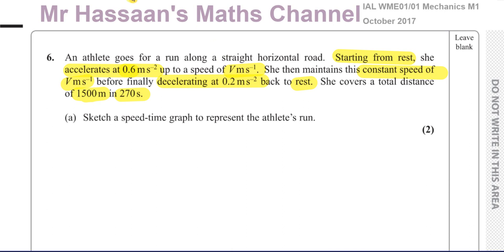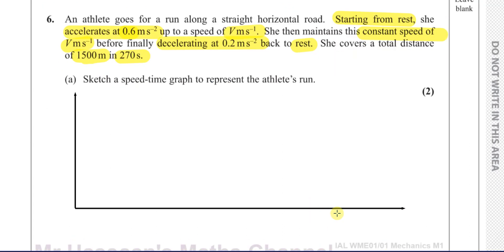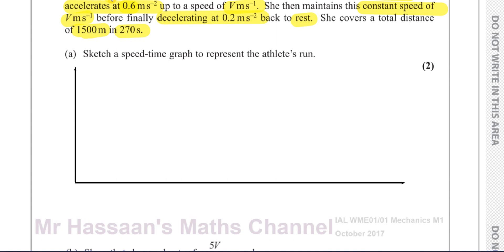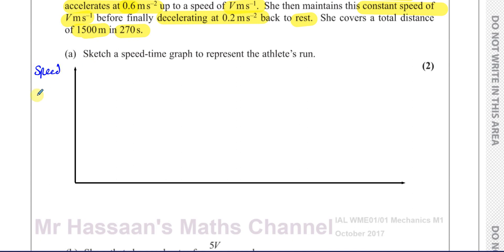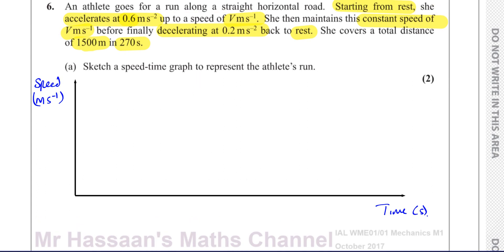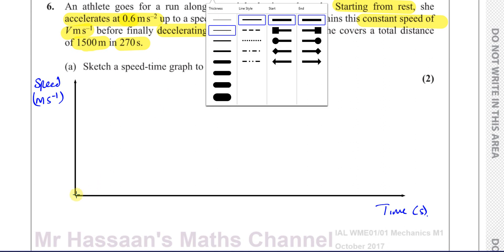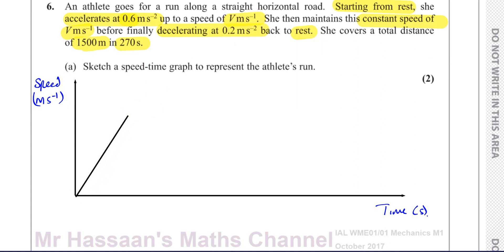Part A: sketch a speed-time graph to represent the athlete's run. So we're going to have speed plotted against time — speed in meters per second against time in seconds. Starting from rest, so we begin at the origin (0, 0), and we go up to a speed of V meters per second.